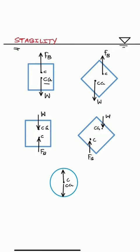If the center of gravity is located below the center of buoyancy, then the body is under stable equilibrium. And if the center of gravity is above center of buoyancy, then the body comes under unstable equilibrium.